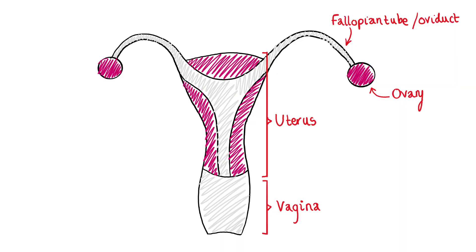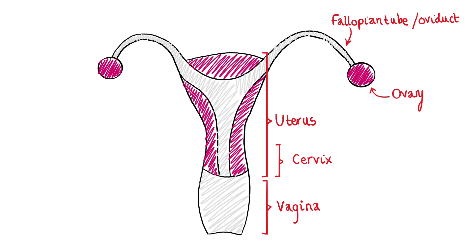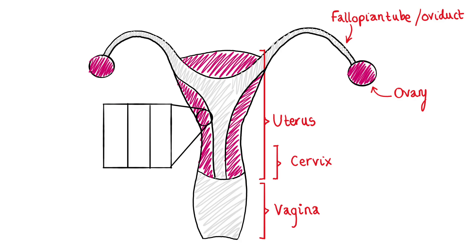Now we're going to talk a bit about the female reproductive system and do a bit of anatomy so that we know what we're talking about. The uterus is basically a muscular organ involved in pregnancy — it supports the development of the embryo and the fetus — and the lower part of the uterus is what we call the cervix. The wall of the uterus is divided into three layers: the innermost layer called the endometrium, the middle layer called the myometrium which is the muscular layer, and then the outer layer called the perimetrium.